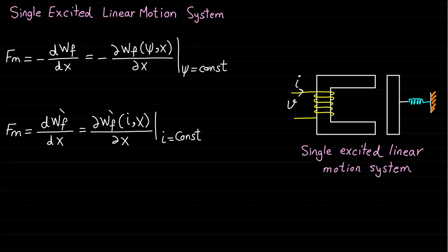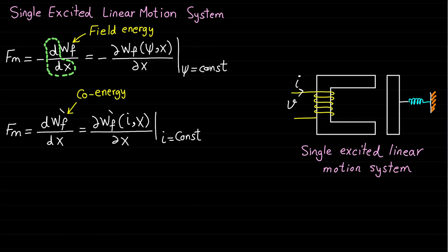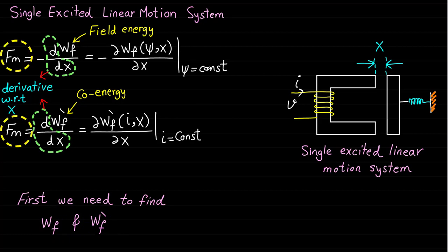It is very clear from these two expressions of the mechanical force that the force can be developed if the field energy WF or the co-energy WF dash are known. Basically, if the field energy or the co-energy are known, the force can be developed by taking the derivative of field energy or co-energy with respect to the position x. So we need to first find WF and WF dash of the single excited linear motion system before applying these two force expressions.